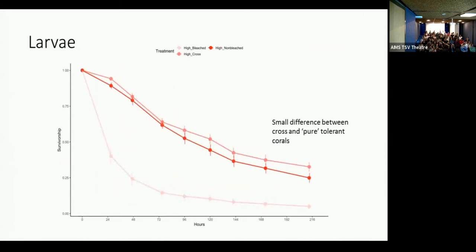This is the same figure. However, I've now added in a line that represents the cross treatment just for simplicity's sake and removed the ambient. So now we have bleached larvae, non-bleached larvae and the cross. Another point here is we don't see very much difference between the pure, tolerant crosses and the overall control cross. This has a lot of implications for assisted gene flow, I think, suggesting that once you introduce some thermally-tolerant corals into the population, you are getting that boost.